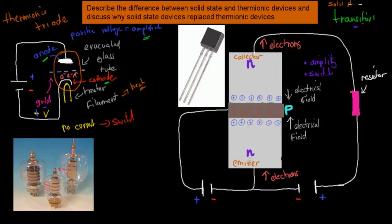I'm covering all this because the dot point says describe the difference between solid state and thermionic devices. The main thing to know is that thermionic devices generally operate on heat energy — that heat energy helps eject electrons from the cathode, which then move to the anode and complete the circuit. Whereas in solid state devices, it's semiconductors that do the same job — semiconductors in solid state devices, whereas heat filaments and heaters in thermionic triodes and diodes.